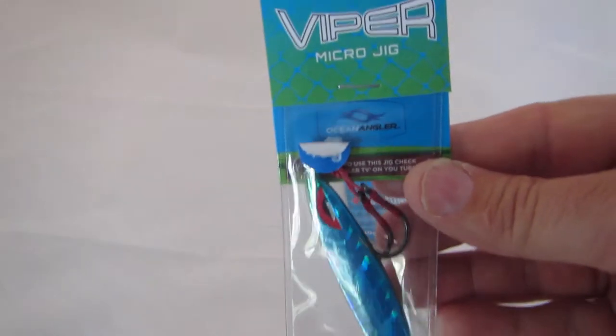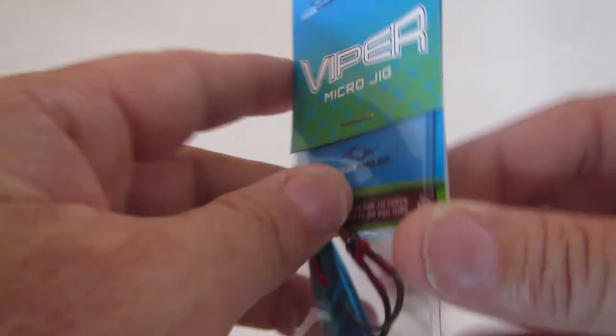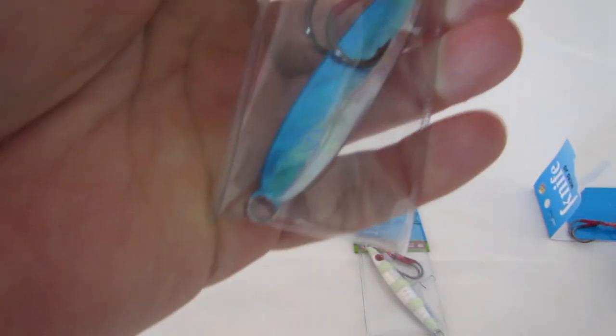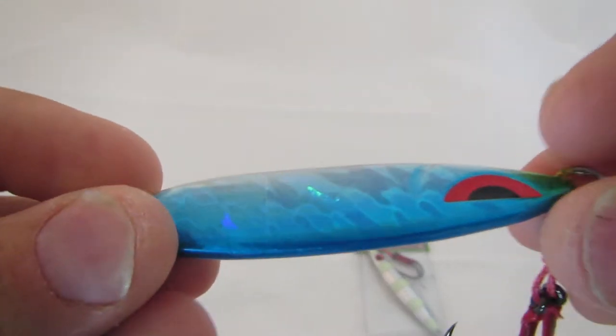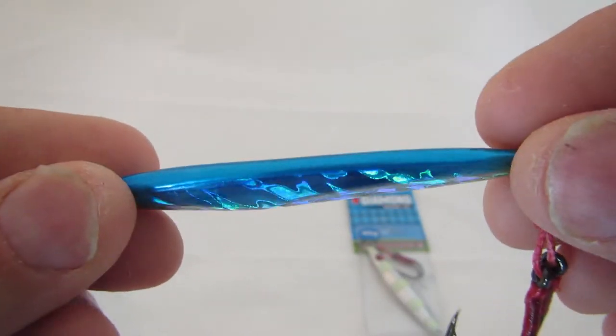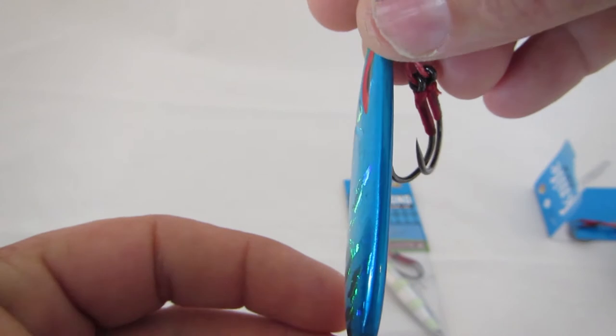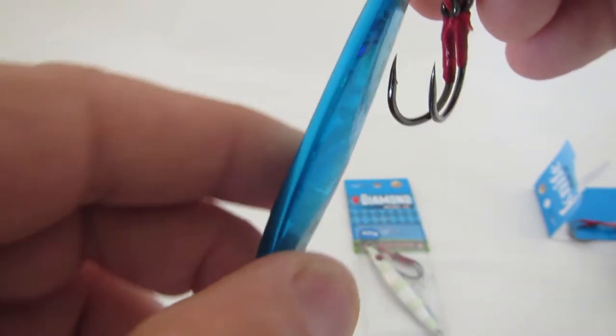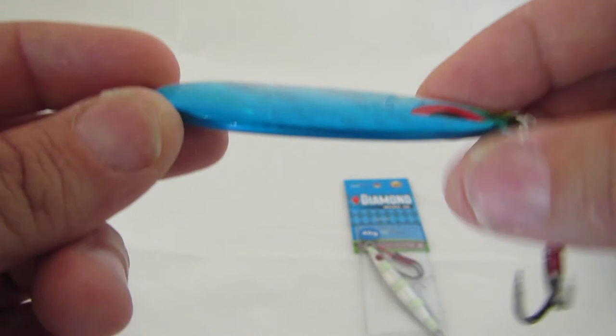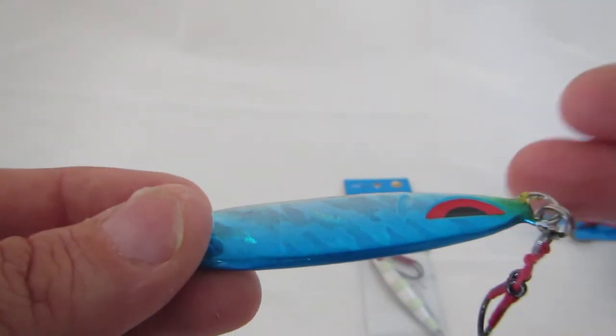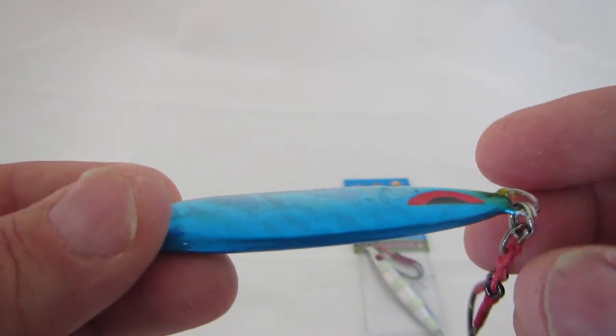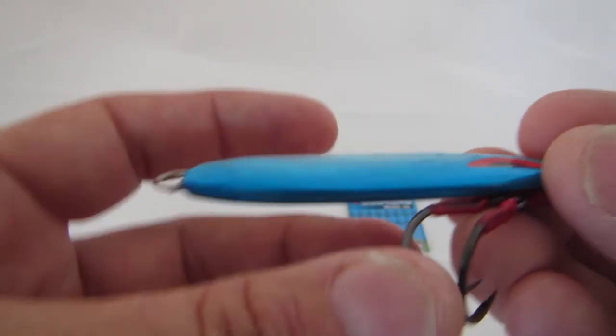Then we move on to the viper, which is a different type of shape. This shape here is for calmer waters or shallower waters because it doesn't get down as fast. It has more hang time. It's flatter, it's a bit like a mini slow pitch jig. You'll see that it's flat, it's got a slender profile weighted at the bottom. What this does is it goes down horizontally, so you twitch it up and then it falls down horizontally, so it takes longer to get down. More hang time, so more time in the strike zone.